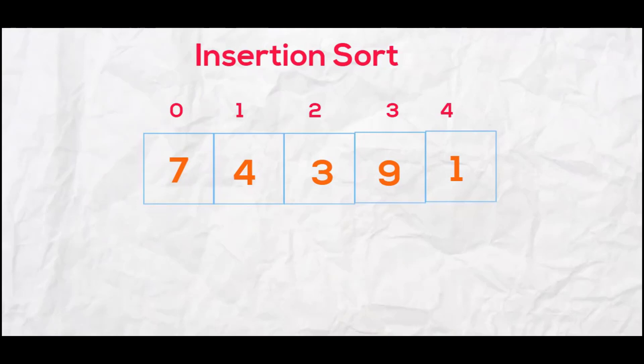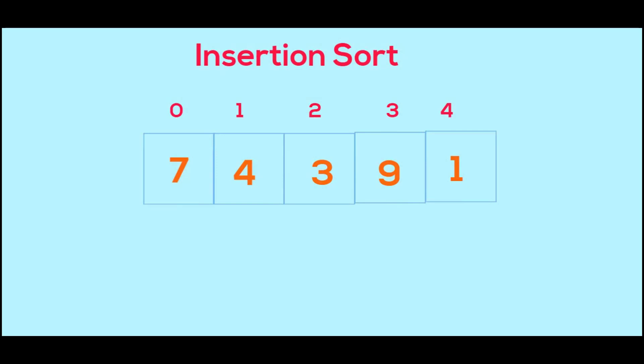In insertion sort, we compare the current element with its left neighbor. If the current element is less than its left neighbor, we swap their positions, then restart the comparison from the beginning after each swap. The first current element is 7 — since there is no element to its left, we move towards 4. We compare 4 with 7, and since 4 is less than 7 we swap their positions.